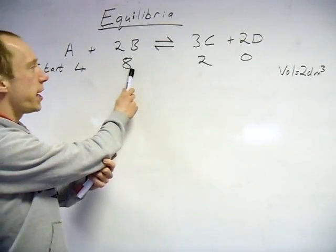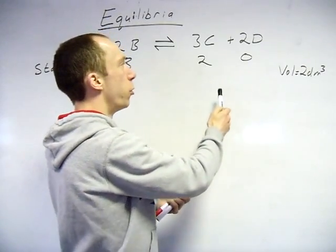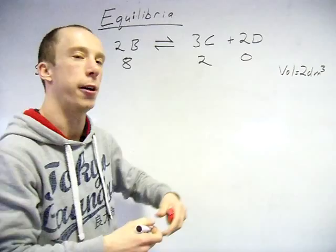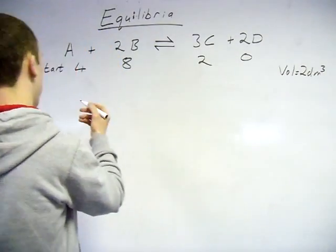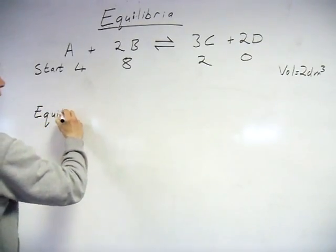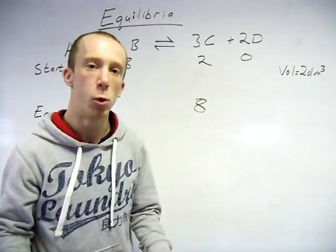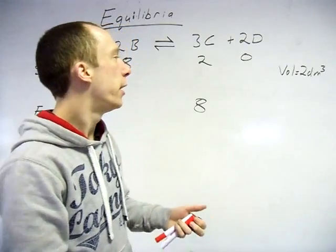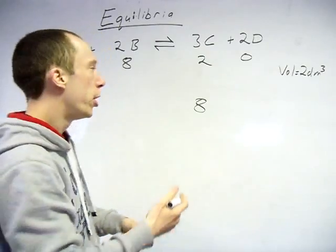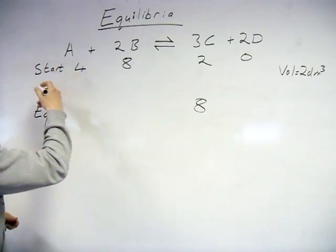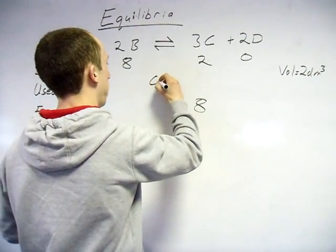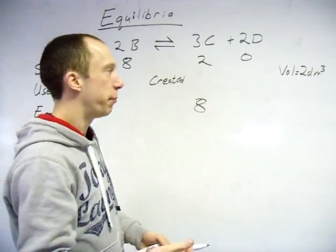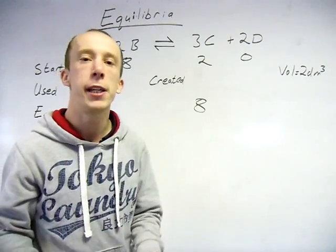So we've been told we started with 4 moles of A, 8 moles of B, and also in the tank there was 2 moles of C and 0 moles of D — so the C did not come from those reactants, it was already sitting there in the container. Now at equilibrium you could be told something like it was found that there were 8 moles of C in that container. Some people can jump straight from start to equilibrium; others like a middle row in the table for 'used and created'. Find out what works for you.